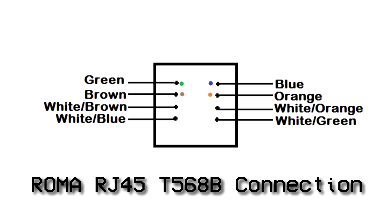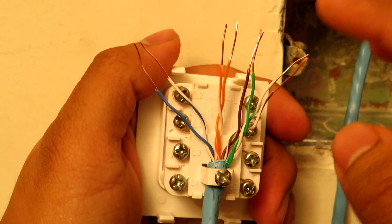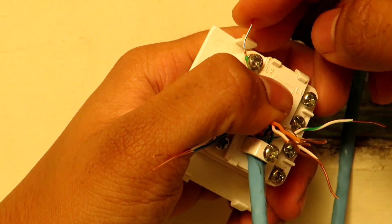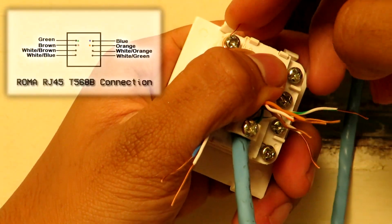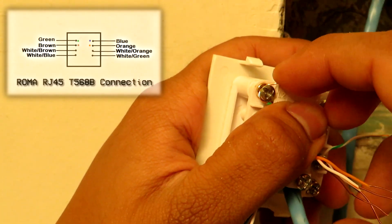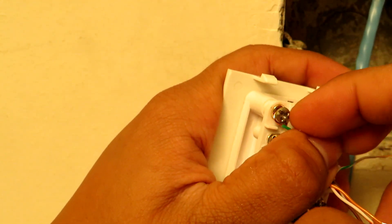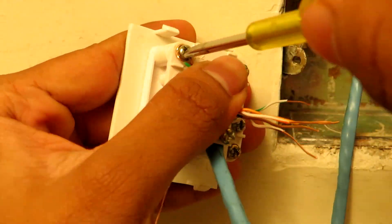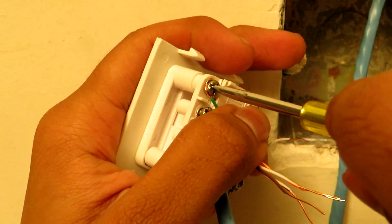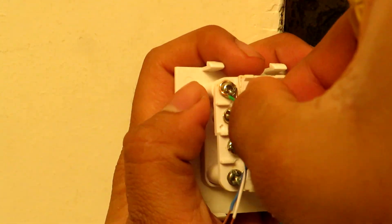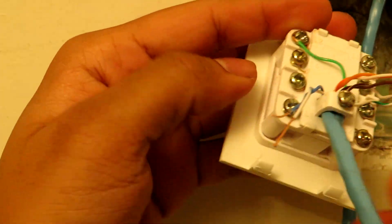This is our Roma RJ45 T568B pinout and this is the same drawing I had used in the video I made six years ago. Now we have nothing much to do but to just loosen the terminal, take the particular wire indicated in the drawing and coil it, then tighten the screw. If you are new here to networking or seeing the LAN wire for the first time, let me tell you that white slash brown or white slash color, for example white brown, means the white color which was bundled with the brown pair. Same way, white orange means the white color which was bundled with the orange pair.